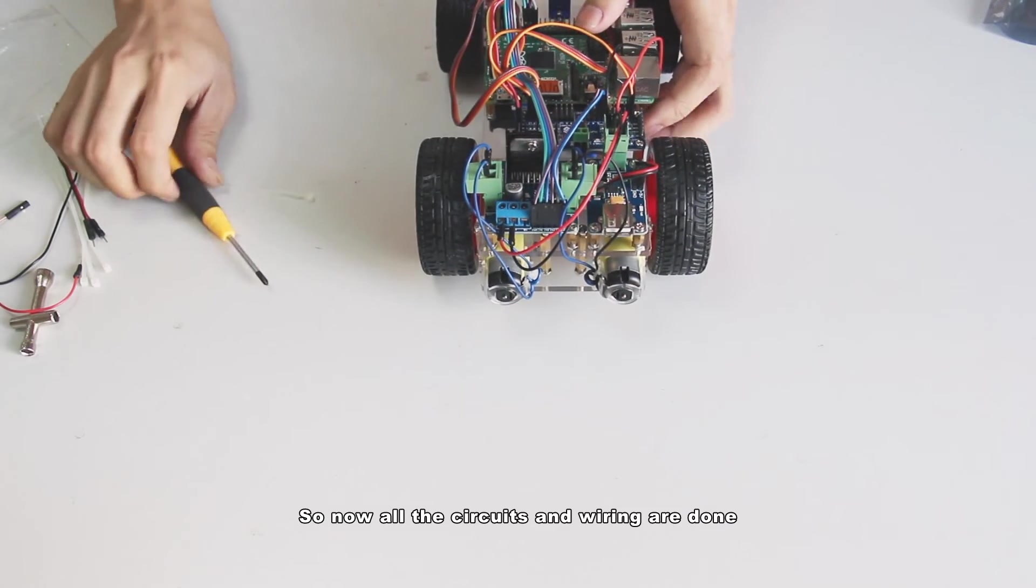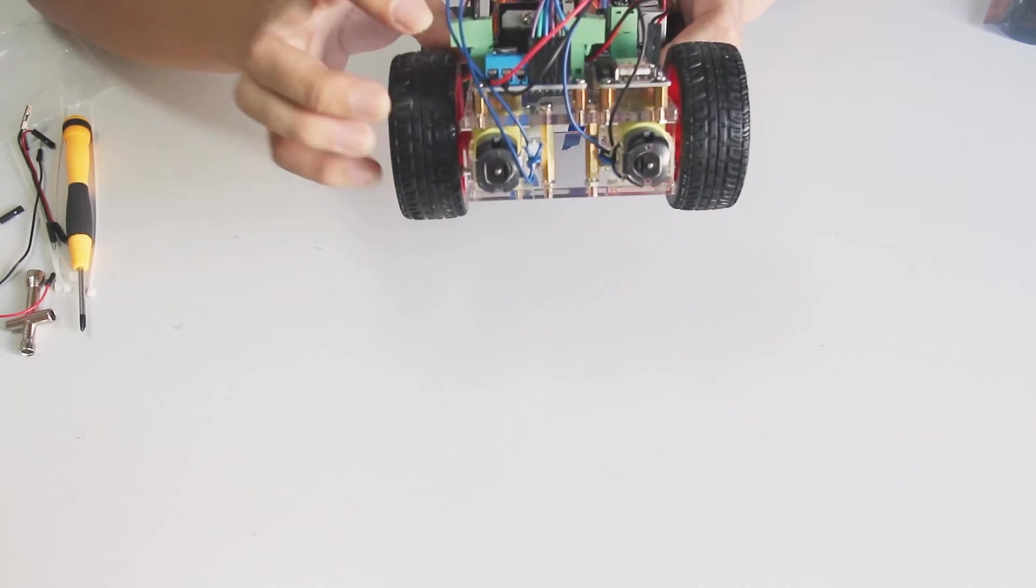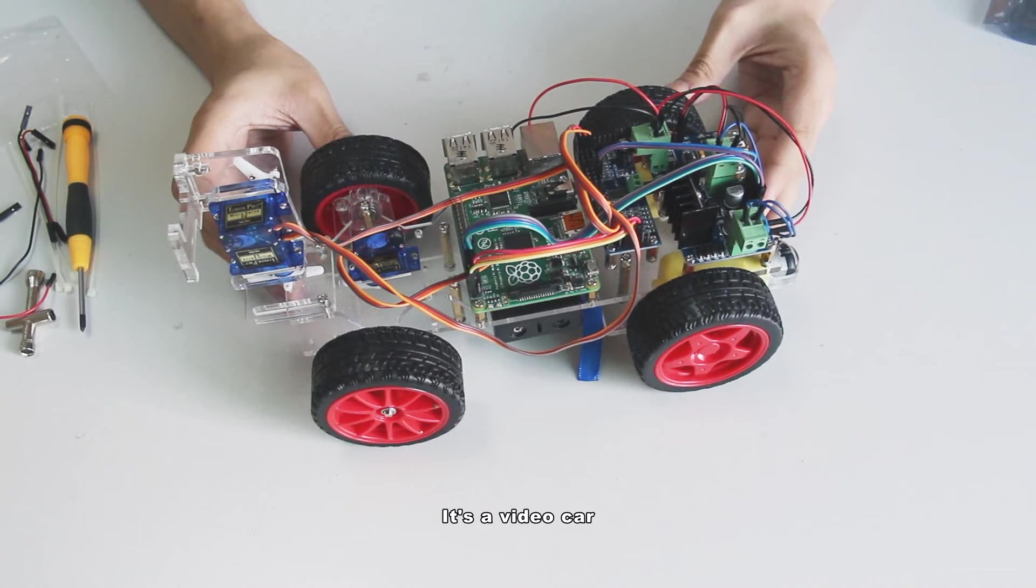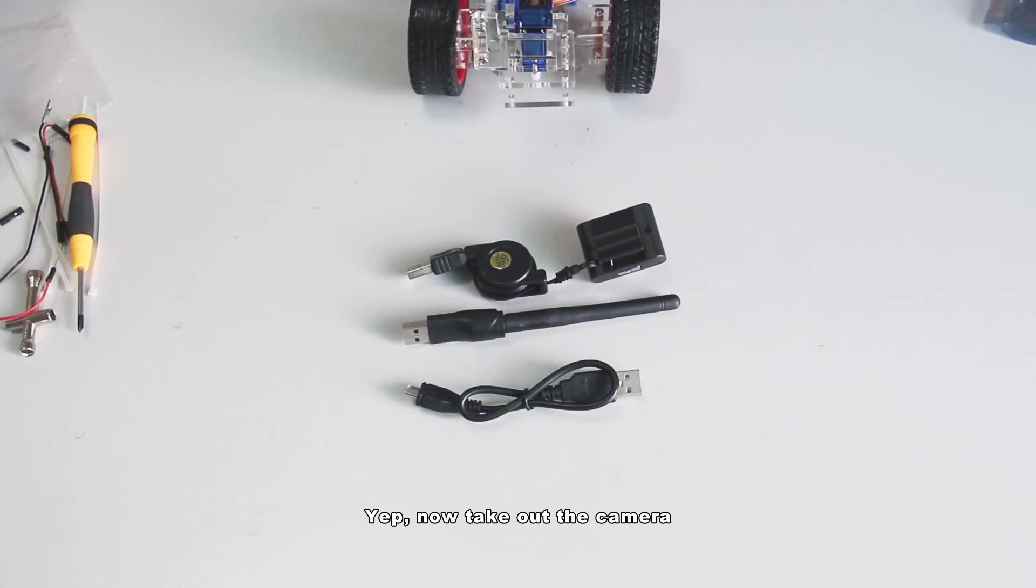So now all the circuits and wiring are done. But hold on. It's a video car. Then where is the camera? Yep. Now take out the camera, USB cable and WiFi adapter which is to connect it with the internet and upload the data.